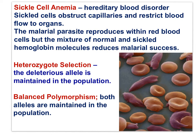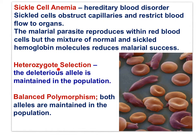Here's an image showing sickled red blood cells. If you're homozygous for sickle cell anemia, you have many sickled cells that obstruct capillaries and restrict blood flow to organs. However, if you're heterozygous in a malarial environment, the mixture of normal and sickle cell hemoglobin molecules reduces malarial success. The heterozygous genotype is favored in a malarial environment.